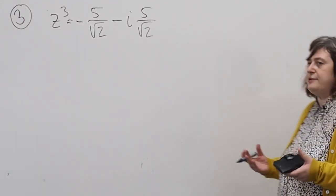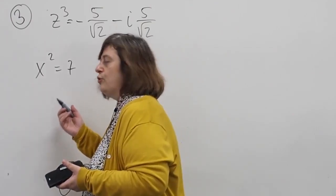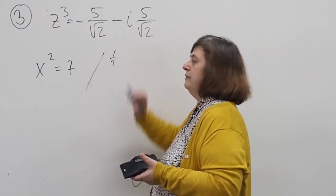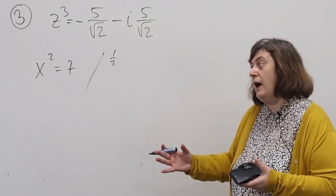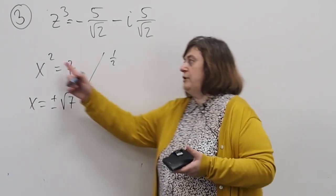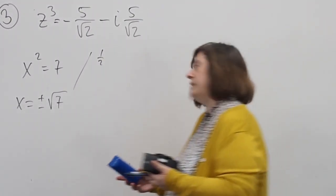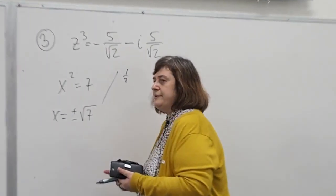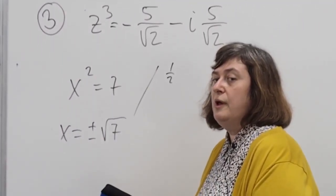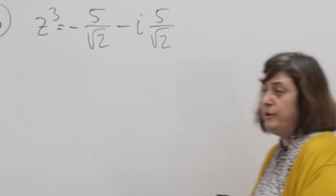This is just like x³ equals something. If I asked you to solve x² equals 7, you would take the square root — raise both sides to the power of one half — and get x equals plus or minus square root of 7. You'd have two solutions because the power is 2. In general you can have fewer if solutions coincide, and in the reals some solutions could be complex. Here z is a complex number, so we will have three solutions.